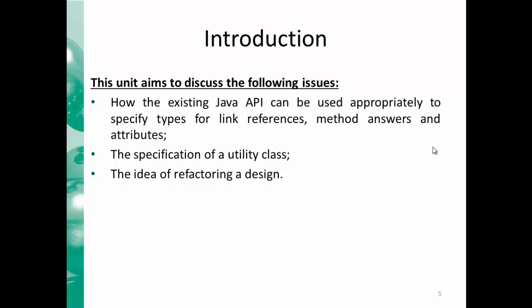The main aims of the unit are to find out how the existing Java API can be used to specify the link references, method answers, and attributes. We will cover what we call a utility class and see what kind of specifications are required for such a class. Then we cover the idea of refactoring a design and why sometimes this is a very important step.